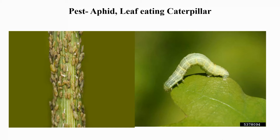Protect the plant from pests and diseases. Aphids and leaf eating caterpillar are the common pests. Aphid is a major pest of cumin crop; it sucks the sap of tender parts and reduces yield. Spraying dimethoate or monocrotophos is recommended to control aphid. The leaf eating caterpillar causes damage to the foliage of plants reducing yield. It can be controlled by spraying of phosphomidon in the early stage of crop.